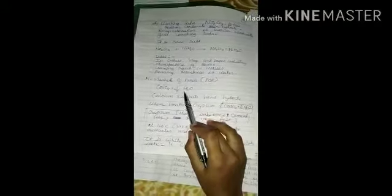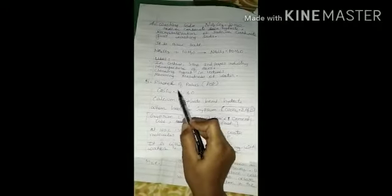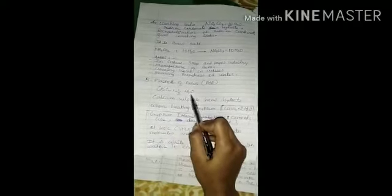Fifth is plaster of paris. It is also written as POP, CaSO4.1/2H2O, calcium sulfate hemihydrate. Hemi means half. When heating gypsum, CaSO4.2H2O is known as gypsum. Gypsum is a hard substance.